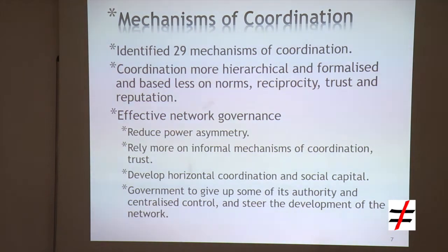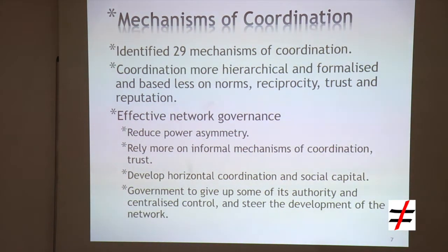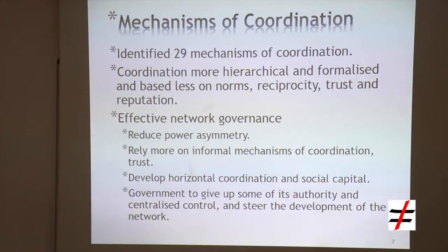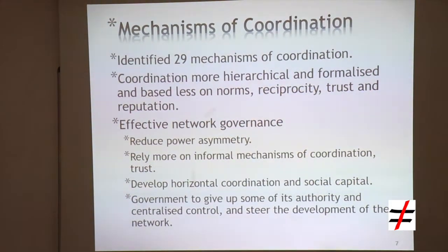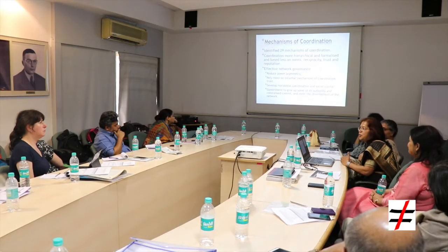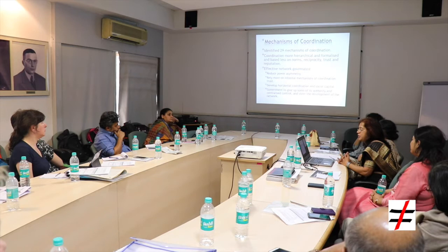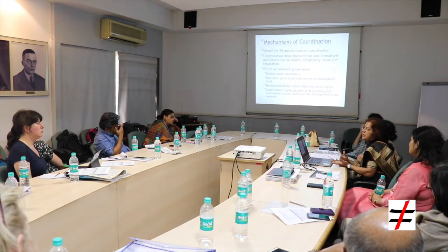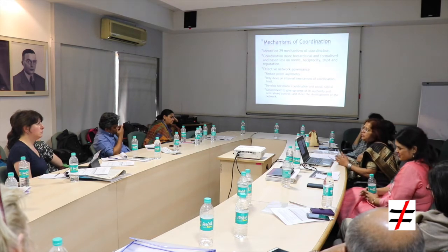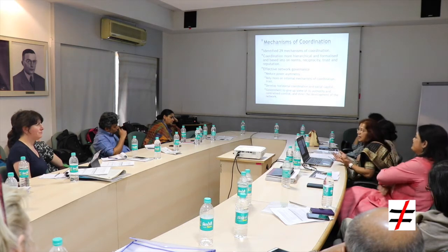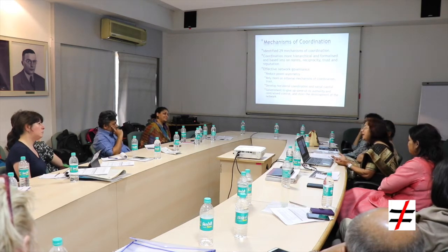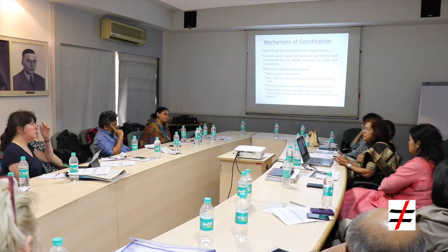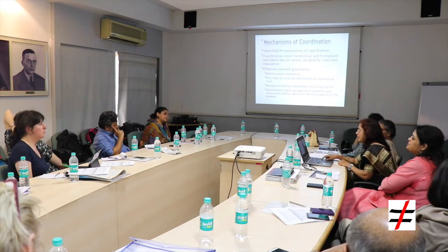We concluded in that research that for effective network governance, there is a need to reduce the power asymmetry, rely more on informal mechanisms of sustaining the partnership, and develop horizontal coordination, trust, and social capital. The government should give up some of its centralised control and make space for greater participation of NGOs and private providers. Governance should shift from doing to facilitating, from rowing to steering — but that kind of shift has not happened even after many years, as the same issues of power asymmetry and lack of trust persist.